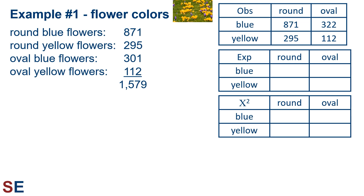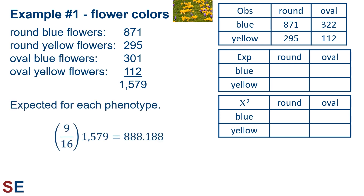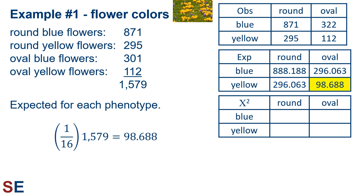Now we calculate the predicted values. The predicted number of round blue individuals is 9/16 × 1,579 = 888.188. The predicted number of oval blue individuals is 3/16 × 1,579 = 296.063. The predicted number of round yellow individuals is also 3/16 × 1,579 = 296.063. Finally, the predicted number of oval yellow individuals is 1/16 × 1,579 = 98.688. We keep these as decimals to avoid rounding error.